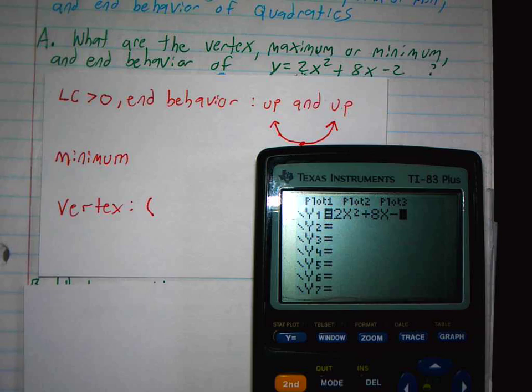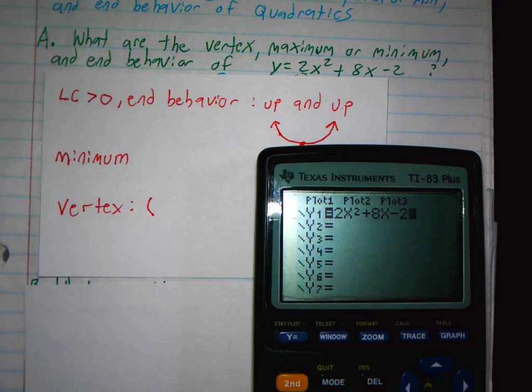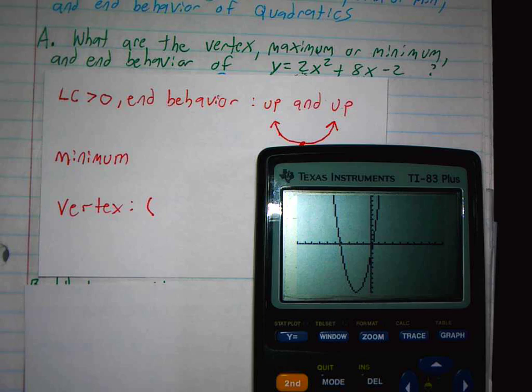And so you're going to graph it. In case you forgot the up, up, down, down rule, quadratics are always up and up or down and down. In this case it's up and up.